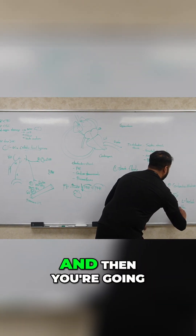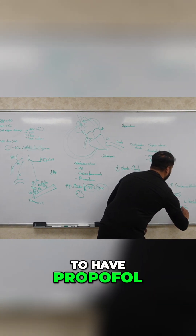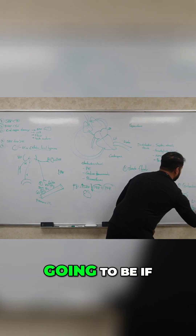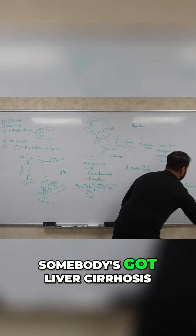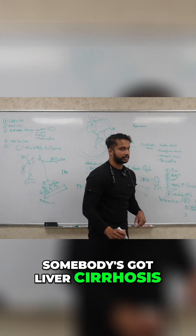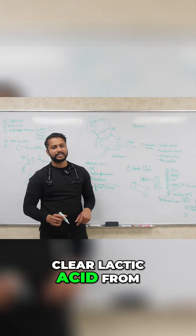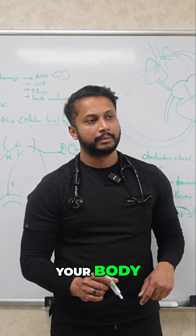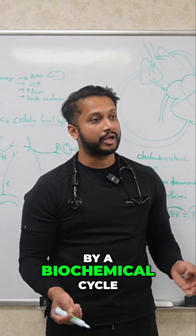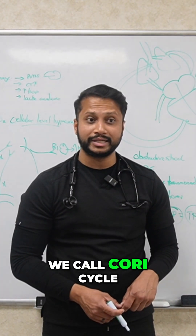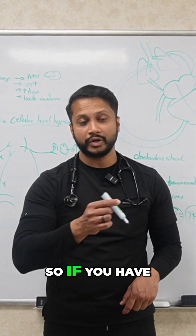So for type B, the important causes are: number one, metformin; number two, propofol; and number three, liver cirrhosis — because how do you clear lactic acid from your body? Through a biochemical cycle we call the Cori cycle.